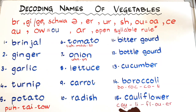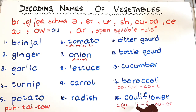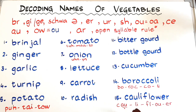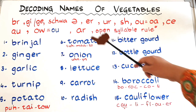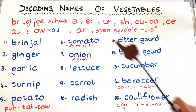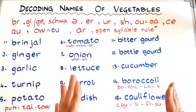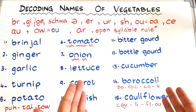At number fifteen we have cauliflower. The spelling uses 'au' as in August as an alternative spelling for the 'aw' sound, giving 'cauli-', and then 'flower'. Here 'ow' is saying the 'ow' sound as in 'out', as I mentioned with the alternative spellings.